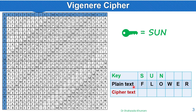You can see that the plain text 'flower' is six alphabets, but the key 'sun' is only three alphabets. So what do we do? We repeat the key again to complete it, making it 'sunsun.' Now we will start the encryption.